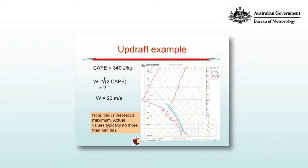For 340 joules per kilogram, you solve the equation as shown: W is equal to the square root of twice the CAPE. That gives you an updraft of 26 meters per second. Note that this is a theoretical maximum, and often the values are typically no more than about half of this, for various reasons we'll explore in other videos.